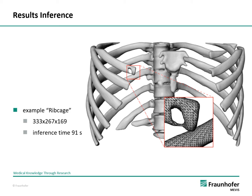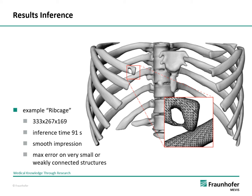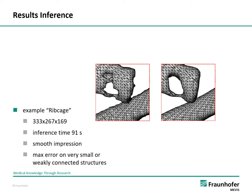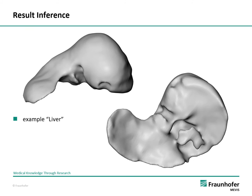The reconstructed surface of the ribcage has a very smooth impression. Larger errors can be found on very small or weakly connected structures, like in this clipping showing a hole in a rib caused by a segmentation error. On the left side is the result of direct polygonization of the binary mask, which shows some additional structure missing on the right side. We also applied the trained neural network on a binary mask of the liver, which has a different voxel size than the training data and the other five anatomic binary masks. The pictures show that the neural network also works in this case, and the reconstructed surface is very smooth. The N3DF was calculated within 13 seconds, indicating that the trained neural network is not limited to a certain voxel size.